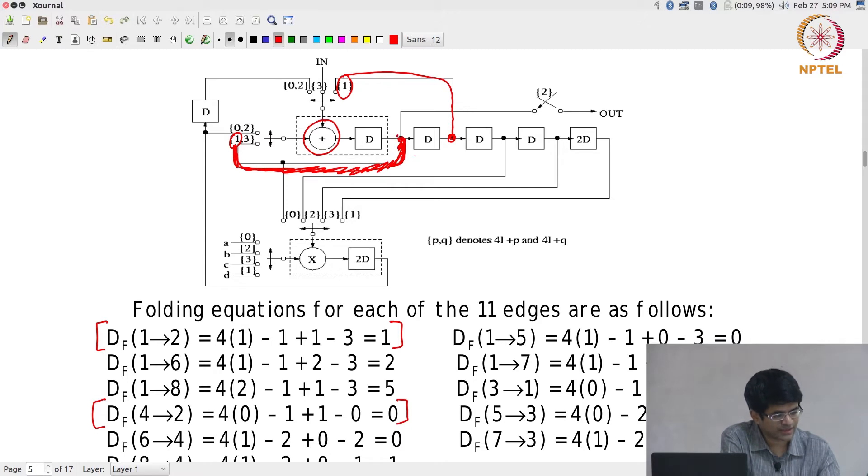This is the output of the adder with one register delay. In other words, this corresponds to the edge from 4 to 2 and this corresponds to the edge from 1 to 2.